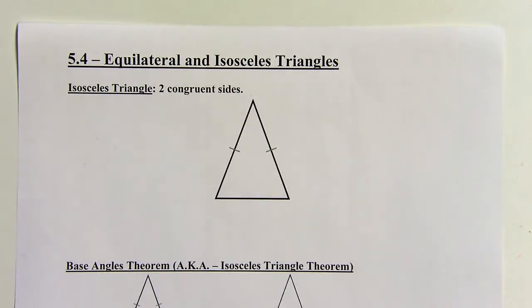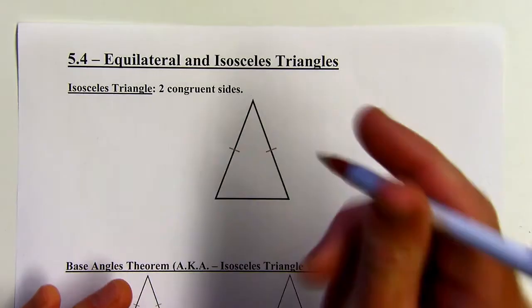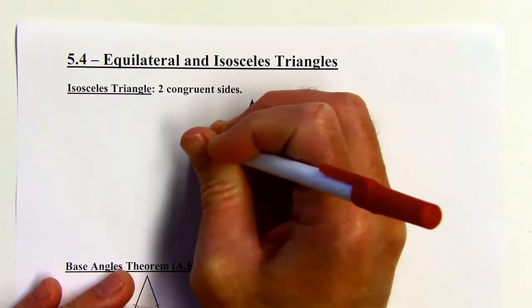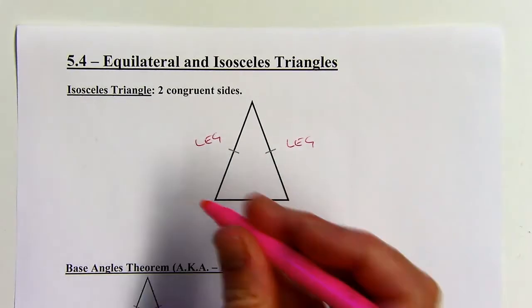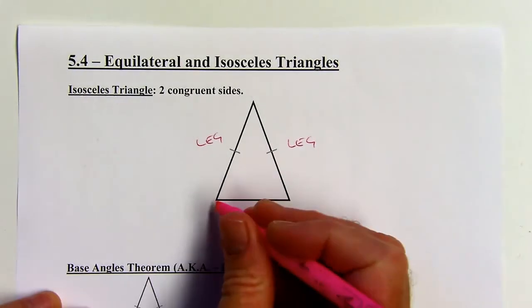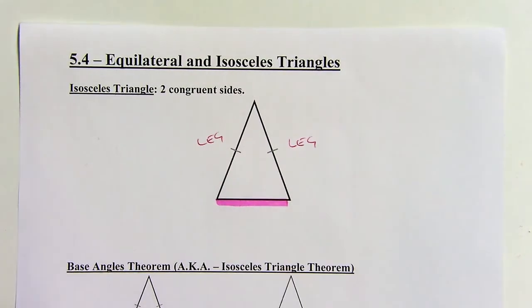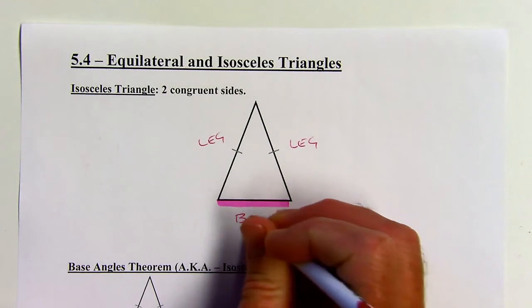First, some vocabulary associated with isosceles triangles. The two congruent sides are going to be called legs — so this would be a leg, and this is a leg. Then the non-congruent side is going to be called the base — that one highlighted there is called the base.